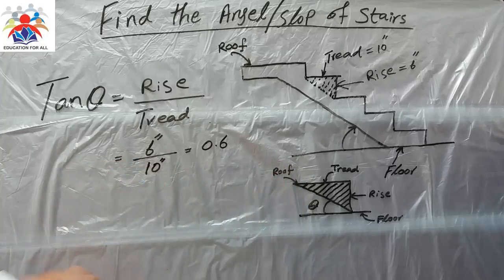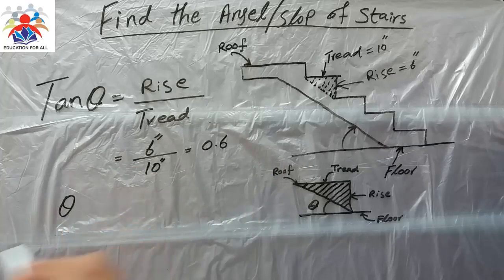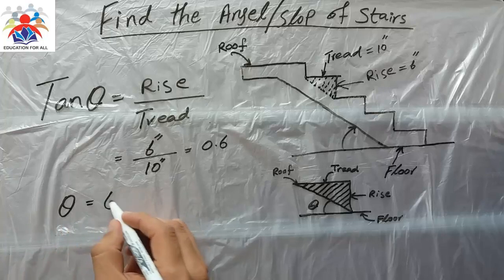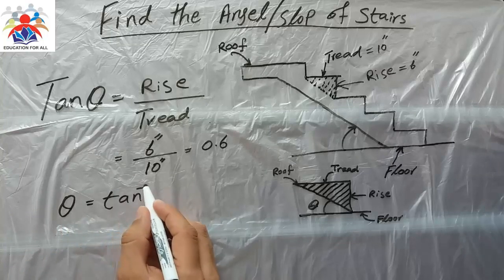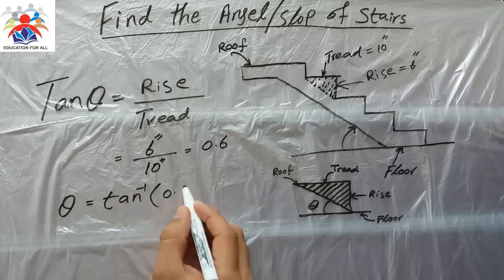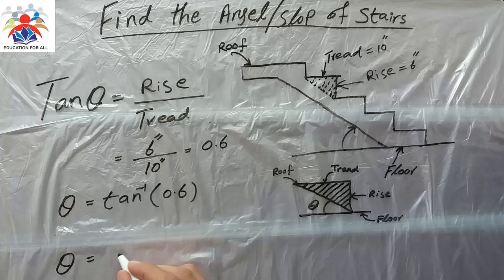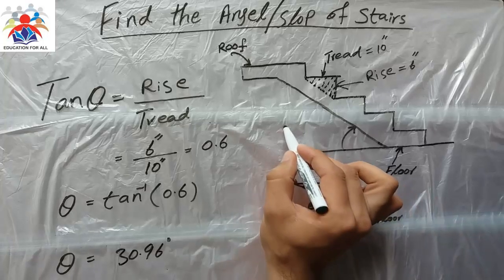Because we need theta, theta is equal to tan inverse 0.6. Theta is equal to 30.96 degrees. So the angle would be 30.96 degrees.